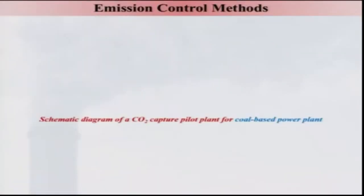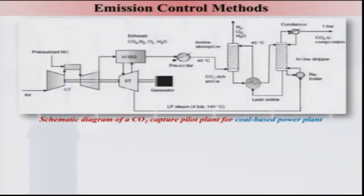However, there will be leakage problems that need to be addressed. Let us look at how we can capture carbon dioxide — there are several ways, but we will focus on how this is done particularly in a coal-based power plant. The schematic shown is a combined power cycle with a gas turbine top cycle and a steam turbine.